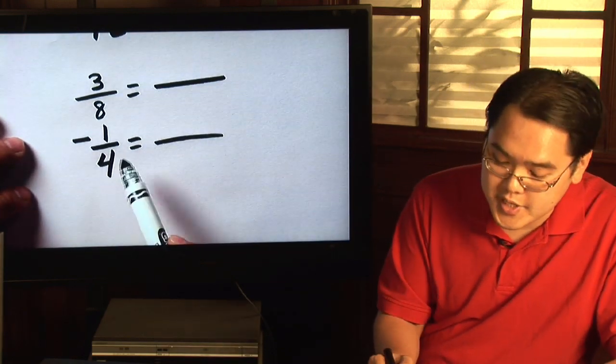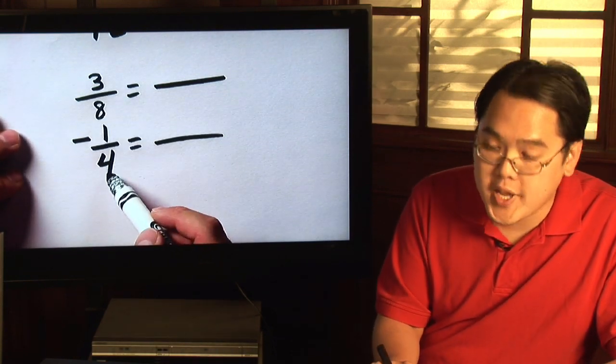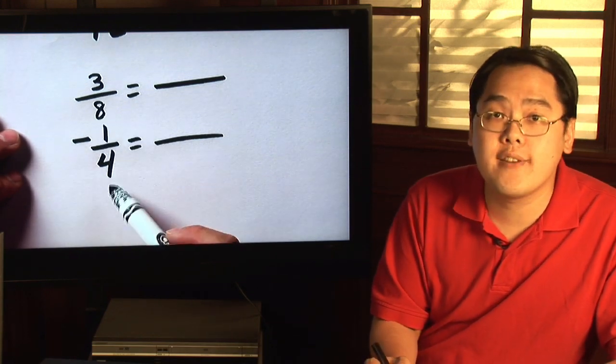The least common denominator is a denominator that both denominators will go into. In other words, with denominators being 8 and 4, we have to ask ourselves what number will both 8 and 4 go into?